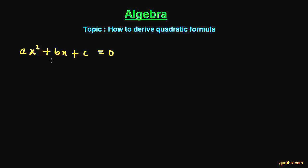Let us see how to get this formula. Suppose we are given the standard form of a quadratic equation, and we have to derive the formula from this equation.